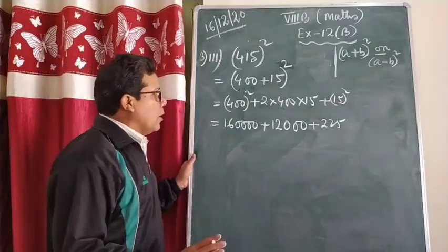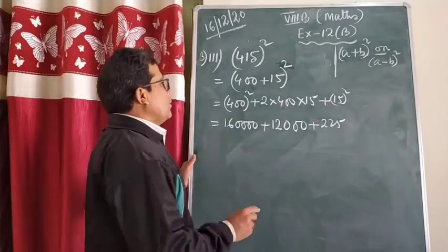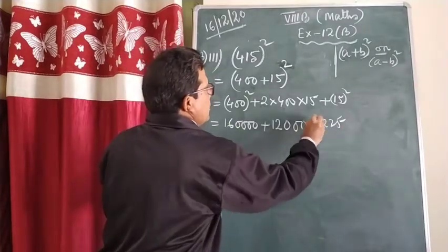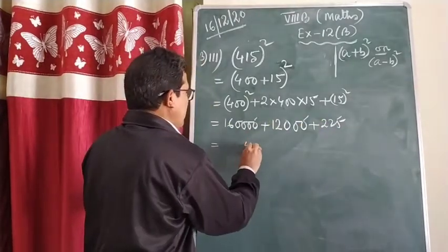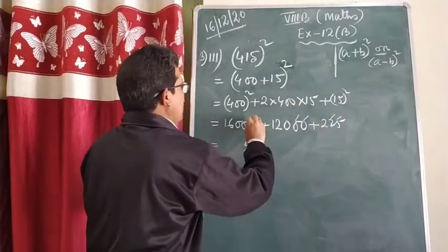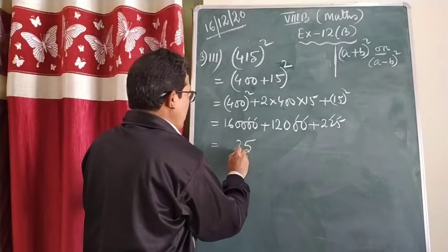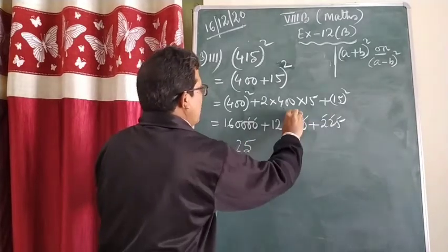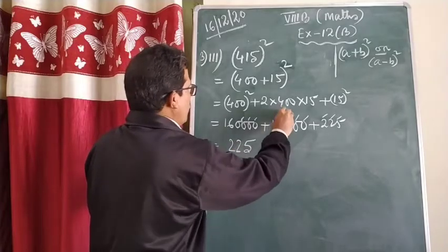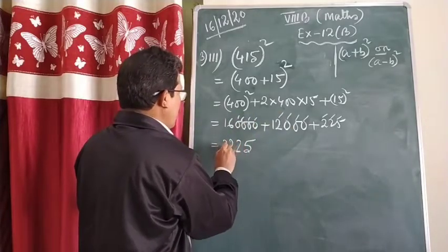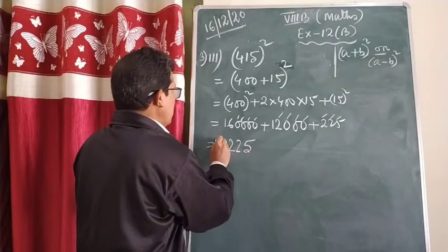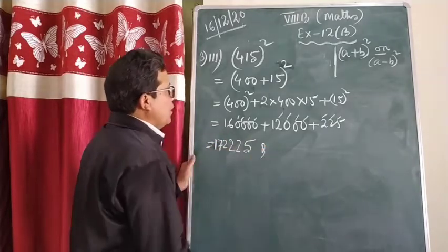In case there is any multiplication error, please correct it. Now for the addition: the unit place gives 5, the next gives 2, then 2, then 2. And 16 and 1 makes 17. So the answer is 172,225. It is easy when you can convert it into the form of either (a+b)² or (a-b)².